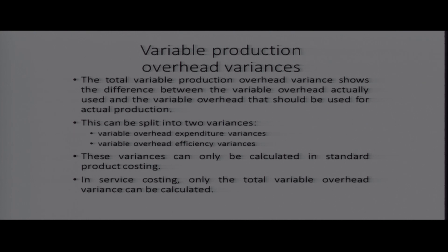The total variable production overheads variance shows the difference between the variable overheads actually used and the variable overheads that should have been used for actual production. The variable overheads variance can be split into two: the variable overheads expenditure variance and the variable overheads efficiency variance. These variances can only be calculated in standard production costing; in service costing, only the total variable overheads variance can be calculated.